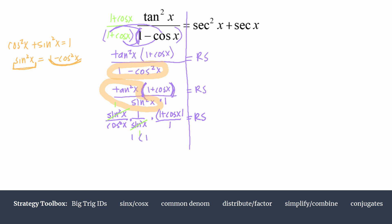1 times 1 plus cosine x. So that was kind of redundant. We don't even need that 1. All over cosine squared x equals the right hand side.